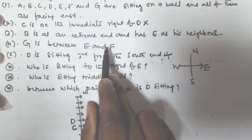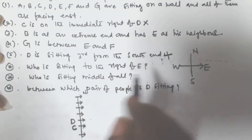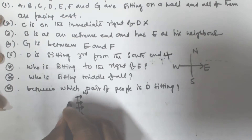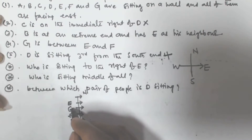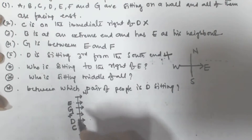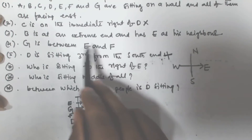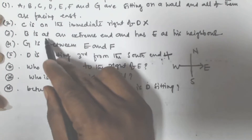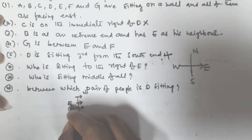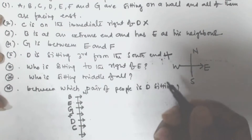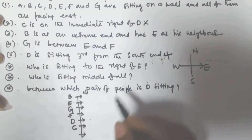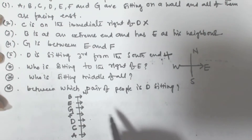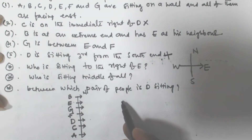G is between E and F, so if I place G here, I can write E here and F here. B is at an extreme end and has E as his neighbor — E is here, so B is at the extreme end next to E. The only position left on the other side is A, so A will occupy that place.